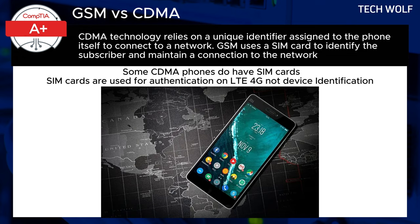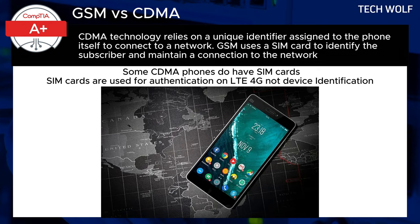LTE is a global standard, so even CDMA carriers like Verizon and Sprint, now part of T-Mobile, use these SIM cards for their 4G and 5G services. However, the core CDMA technology itself doesn't rely on SIM cards for device identity. In these phones, the SIM card is mostly for accessing LTE networks, while older CDMA networks still tie the phone directly to the service provider's system.